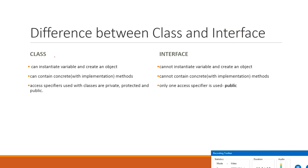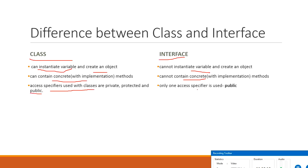Difference between class and interface: A class can be instantiated — you can create an object. An interface cannot be instantiated. A class can contain concrete methods, but an interface contains only abstract methods. Access specifiers with classes can be private, protected, or public, but for interfaces only the public access specifier applies. These are the key differences between class and interface.